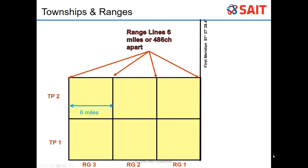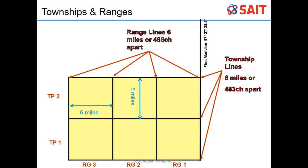Range lines were six miles apart, or 486 chains apart. Township lines were also six miles, but they are 483 chains apart in Alberta. I'll explain why this three-chain difference exists even though both are called six miles once we get into the different survey systems. For now, just know that range lines are six miles and township lines are also six miles.